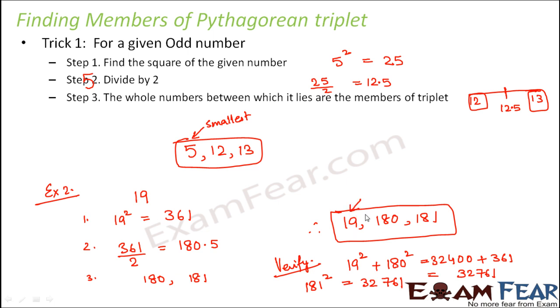19 was the given number and if you look at all three members, you see that 19 is the smallest member of the triplet. So with this trick every time whatever triplet you find out, the given number would always be the smallest member of the triplet.